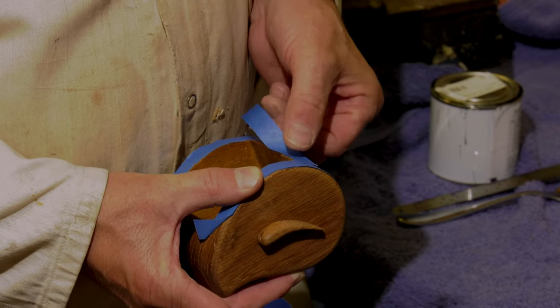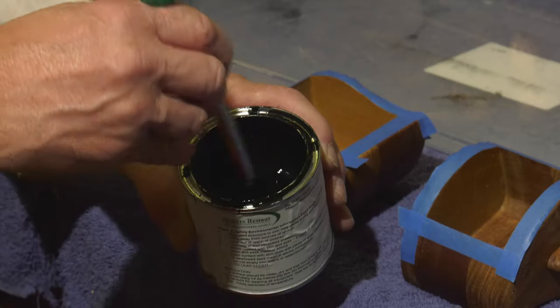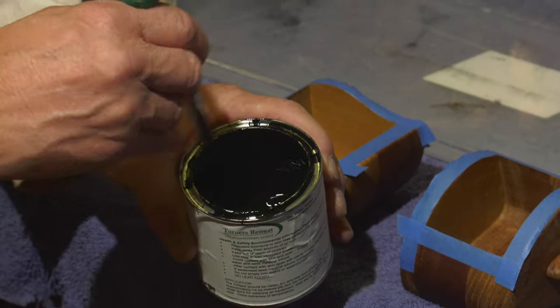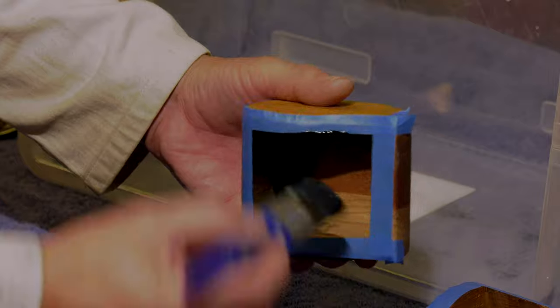The last and finishing touch is to flock the inside of the drawers. This produces a lovely velvet texture and really completes the box.